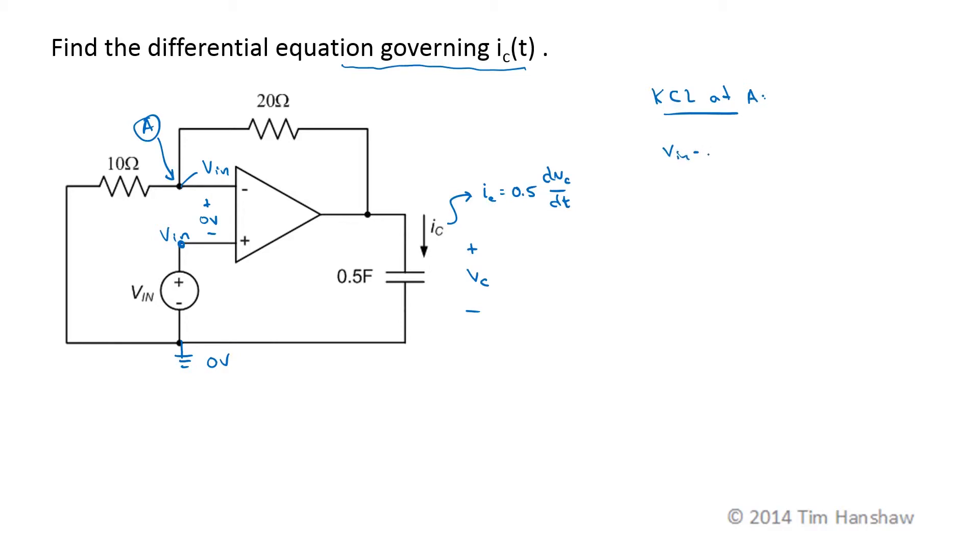So VN minus zero volts over 10 ohms plus VN minus VC over 20 ohms is equal to zero. So multiplying through by 20 and grouping terms, I get 3VN is equal to VC, which is great, except that I don't want my equation in terms of VC. I want my equation in terms of I sub C.